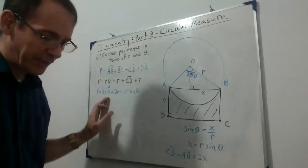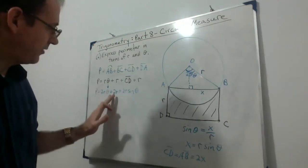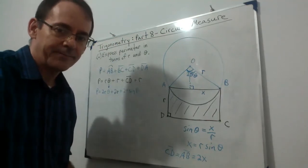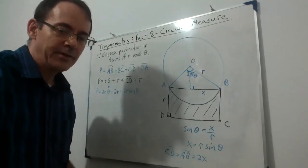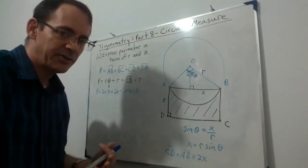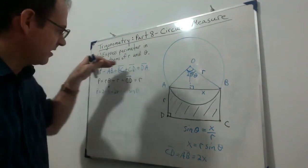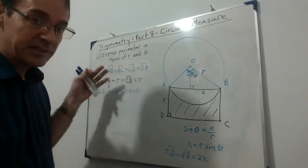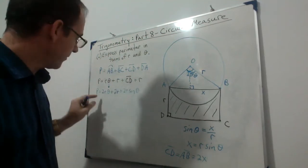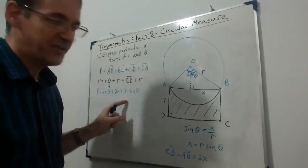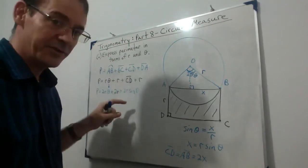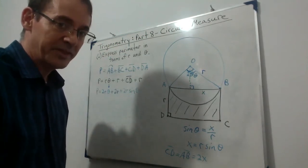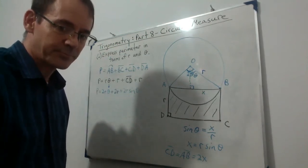Putting it all together, the perimeter of the shaded region expressed in terms of r and θ is: P = 2rθ + 2r + 2r sin θ.